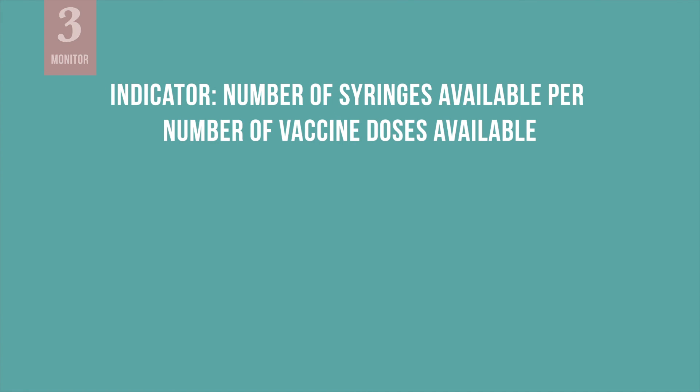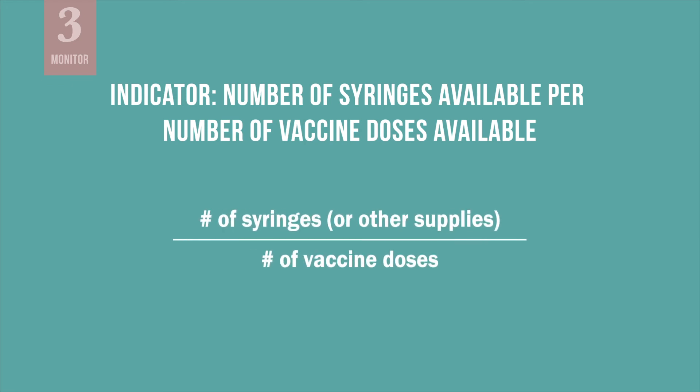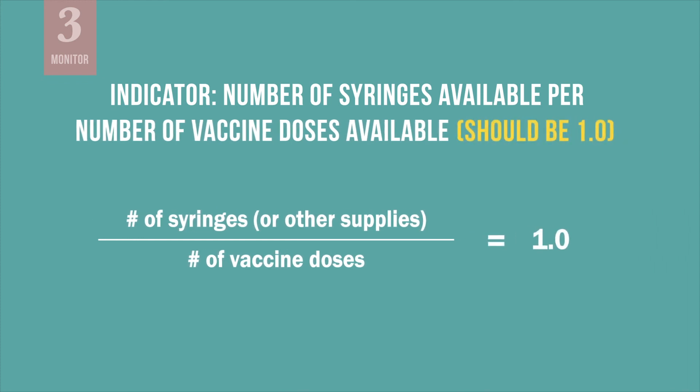Finally, use indicators to monitor the bundling of vaccines and safe injection equipment. For example, one indicator could be the number of AD syringes available per the number of vaccine doses available. This should be 1.0.